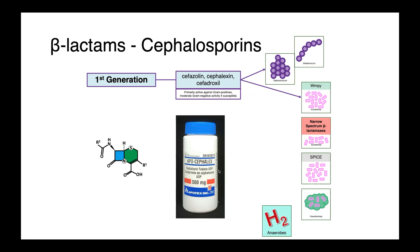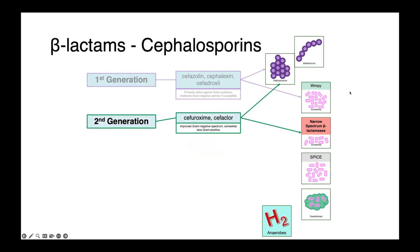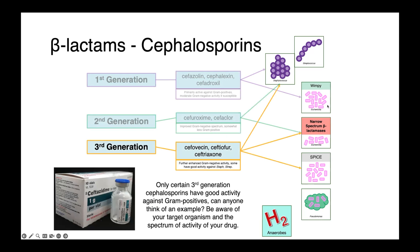Next, we have our cephalosporins, which are commonly grouped into generations. Our first-generation cephalosporins — cefazolin, cefalexin, and cefadroxil — are primarily thought of as having activity against gram-positives, great against staphs and streps. They do have moderate activity against some wimpy gram-negatives without beta-lactamases, things like E. coli. Our second-generation cephalosporins have improved gram-negative activity and somewhat less gram-positive activity.